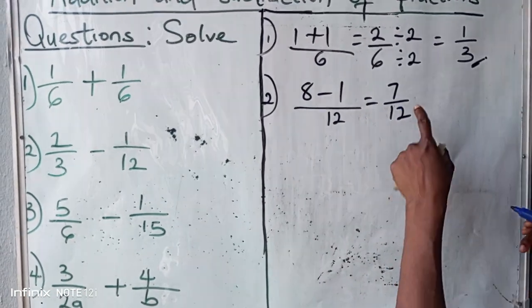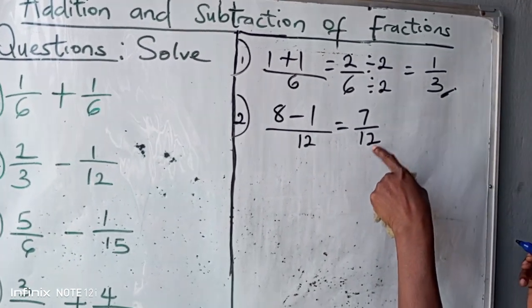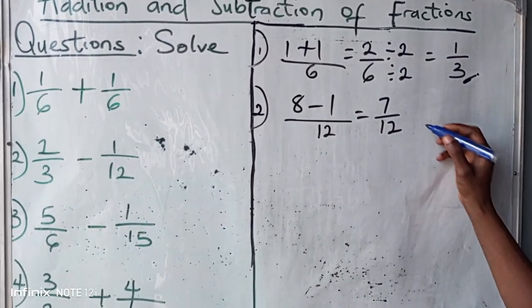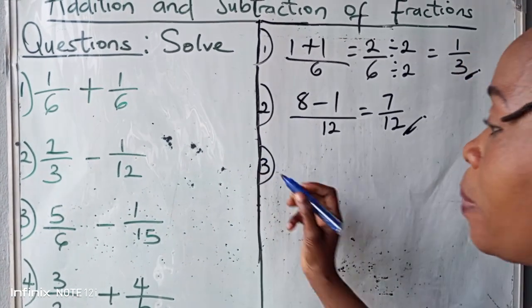We cannot reduce more than this because twelve is not a multiple of seven. That's the final answer. Number three.